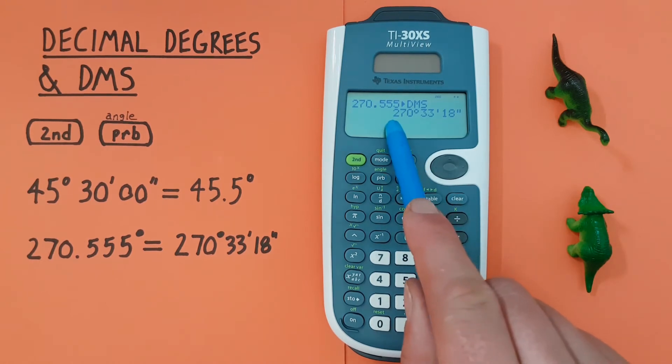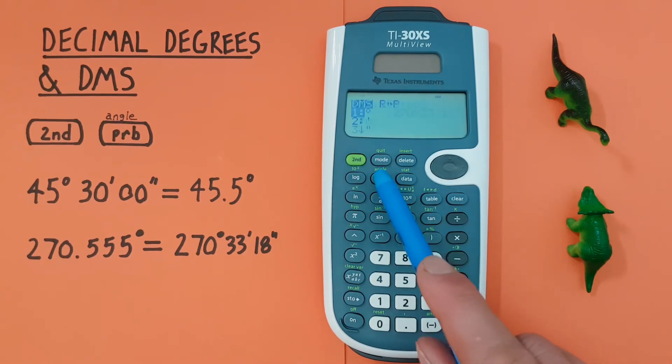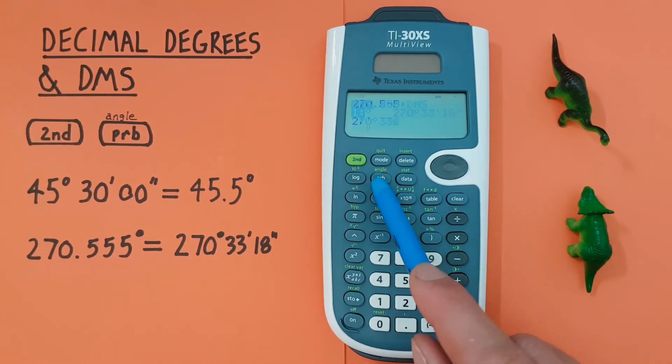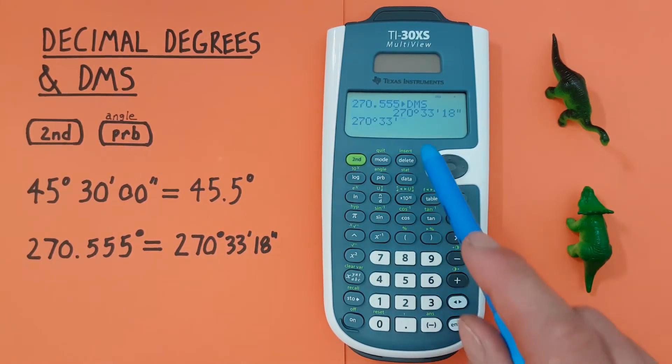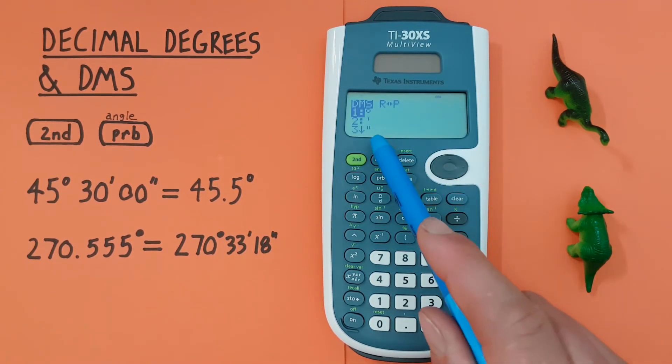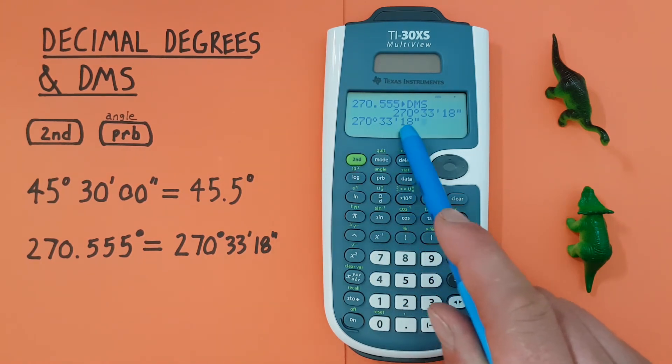And again we can enter that as degrees, minutes, seconds on our calculator using the angle menu here. One, there's our degrees. Two, there's our minutes. And then 18, number three is our seconds. There we go, 270 degrees 33 minutes 18 seconds.